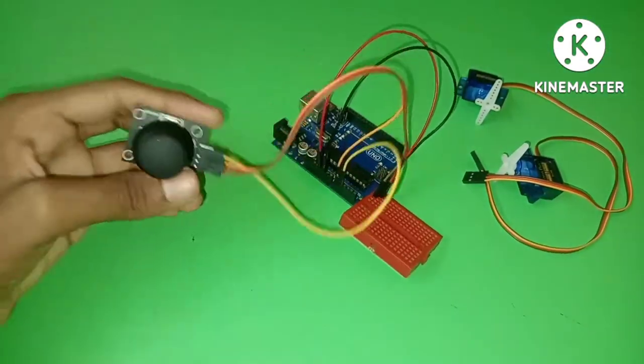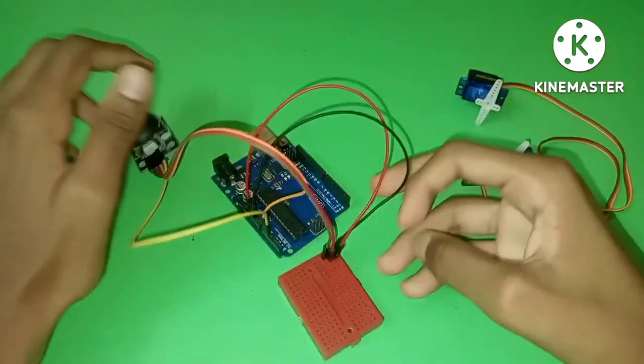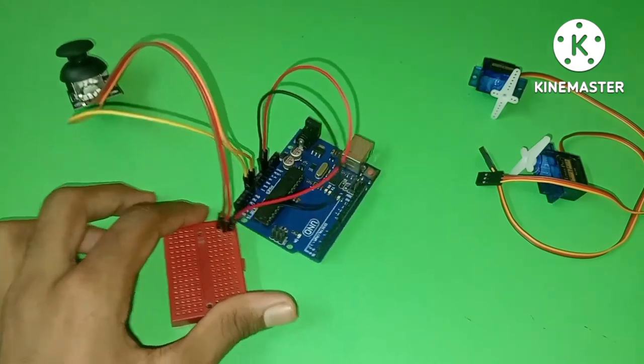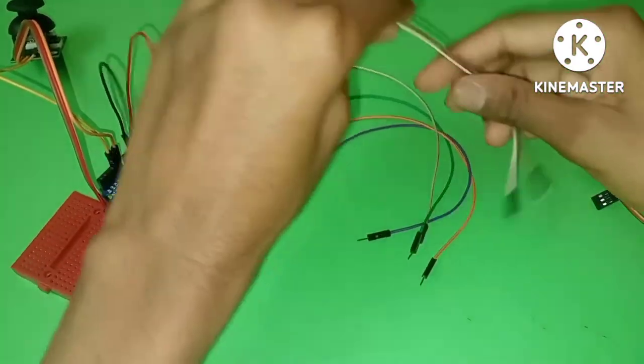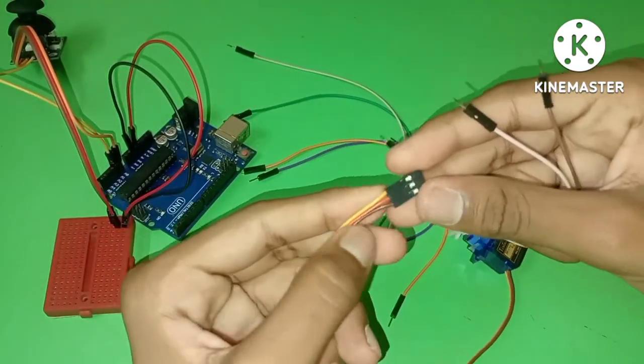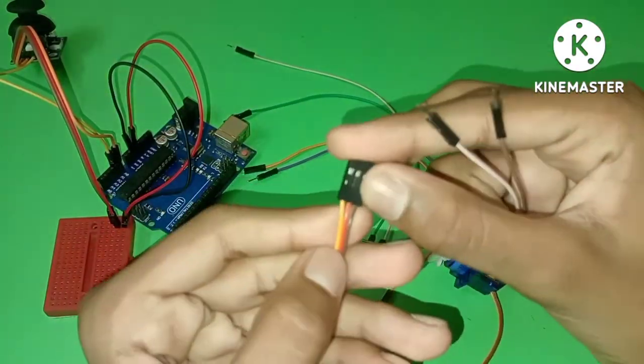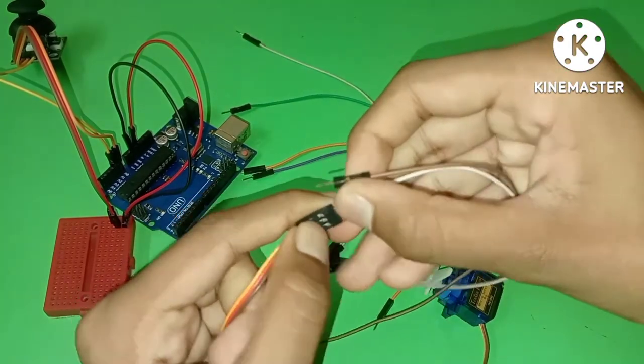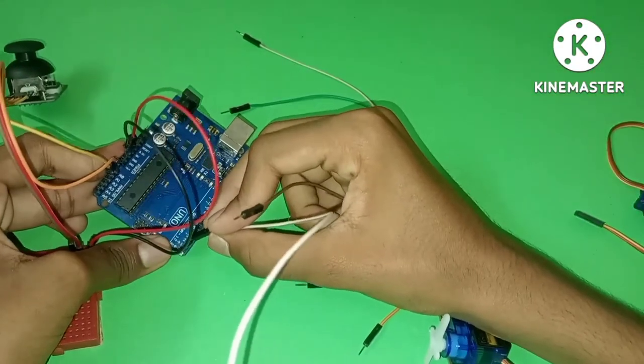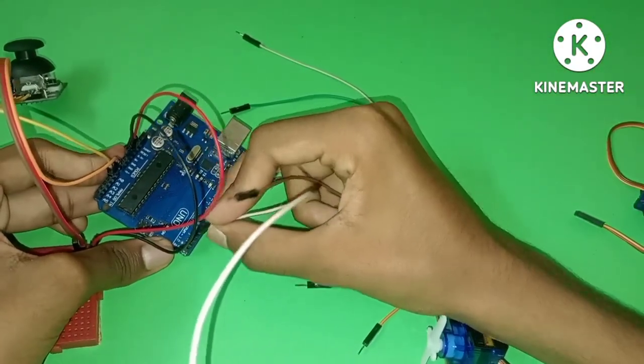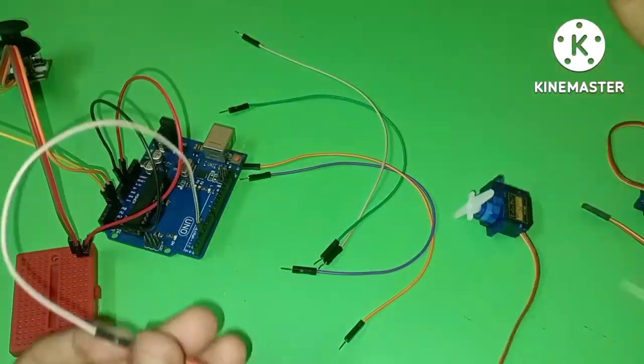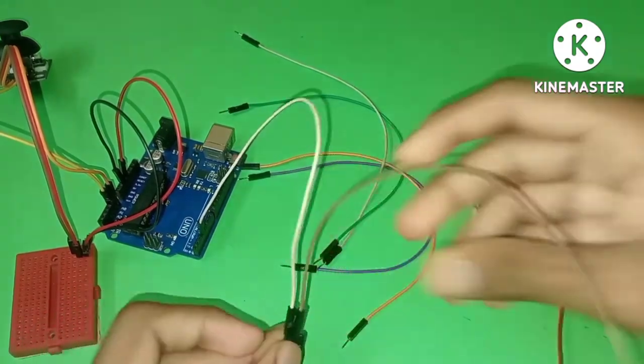When these connections are complete, next connect the servo motor. Use male to male jumper wires. The servo motor has three wires with different colors. The orange wire is the signal pin, which connects to PWM pin 3. The center wire is for 5V power.